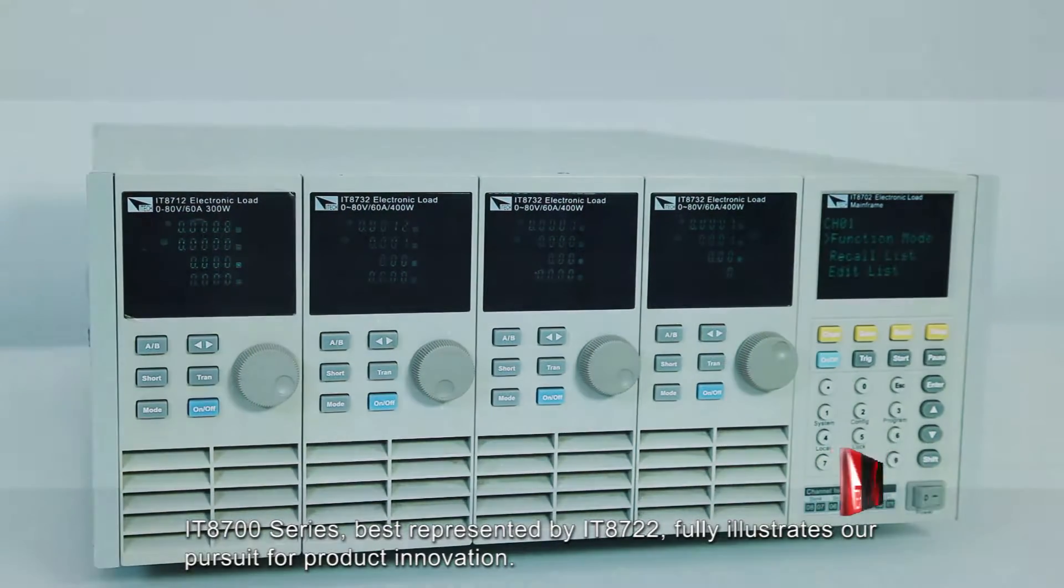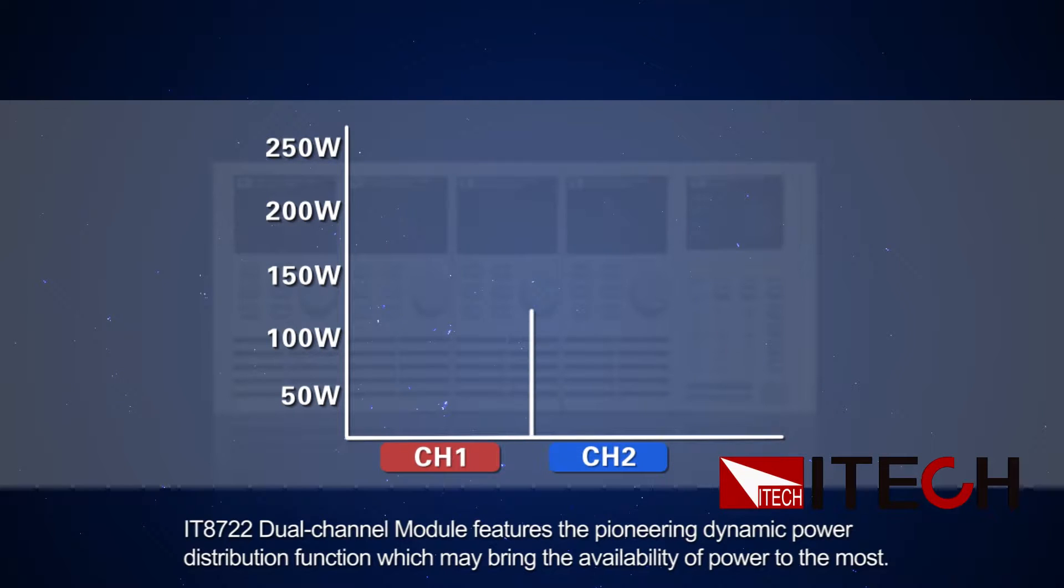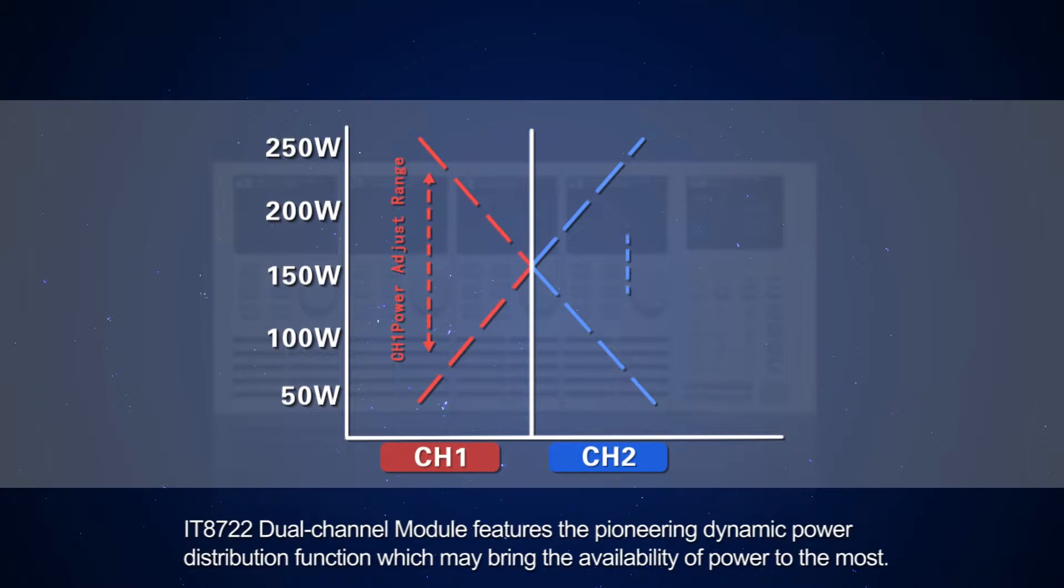The IT8700 series, best represented by the IT8722, fully illustrates our pursuit of product innovation. The IT8722 dual channel module features the pioneering dynamic power distribution function, which maximizes power availability.